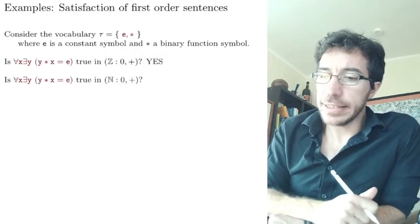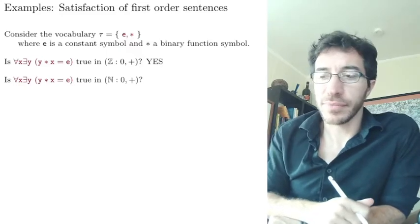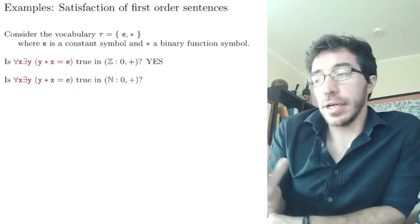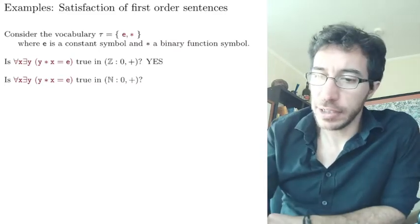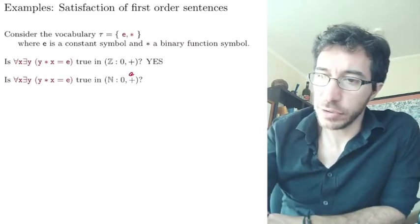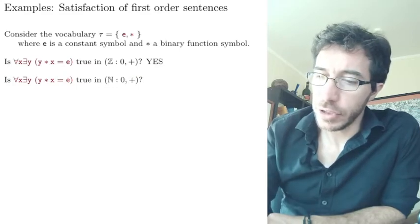What about is this true in the natural numbers? Well, no. If you take, let's say one, there is no number that you add to one to get zero. So again, here this is 0, e, and this one is not true. So the answer is no.